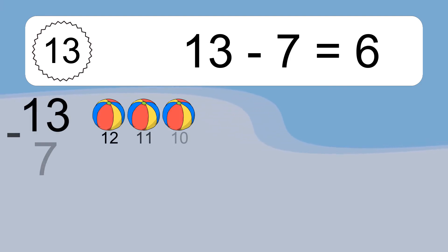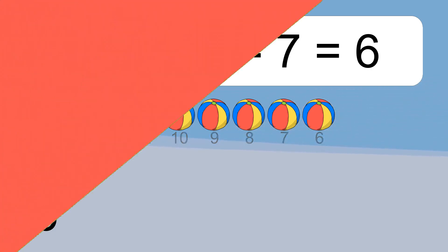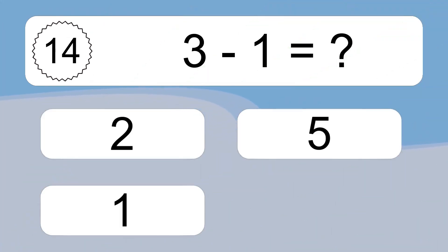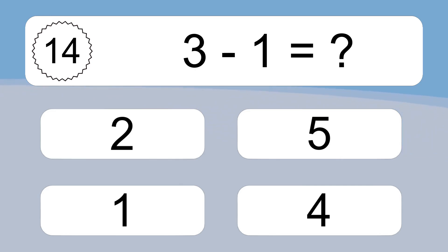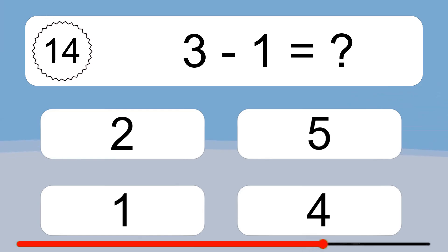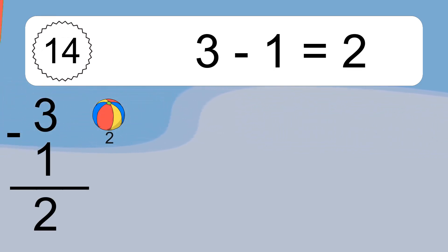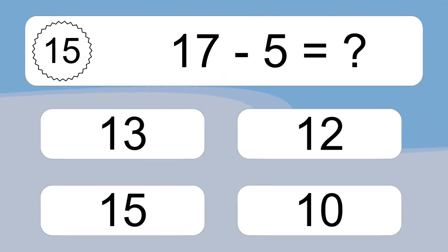13 minus 7 equals 6. Let's count it: 12, 11, 10, 9, 8, 7, 6. 3 minus 1 equals what? 3 minus 1 equals 2. Let's count it: 2.